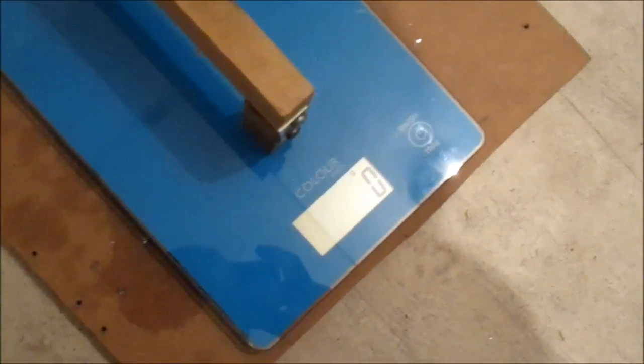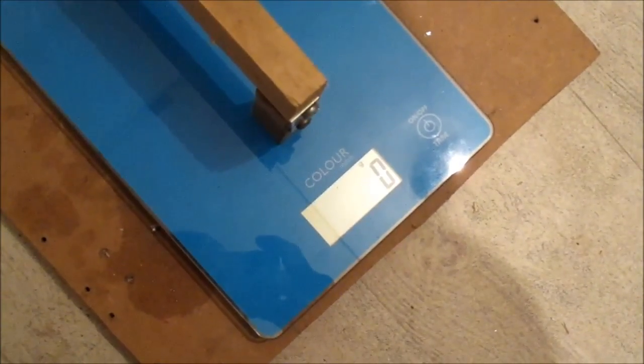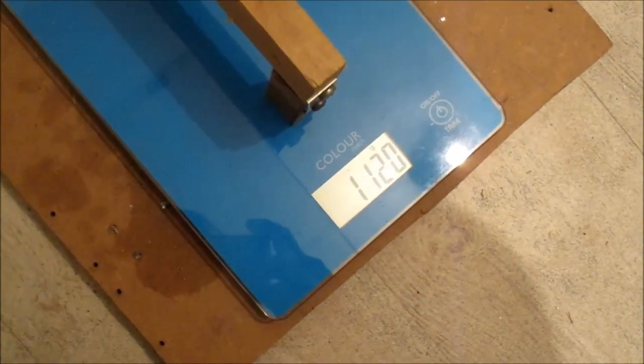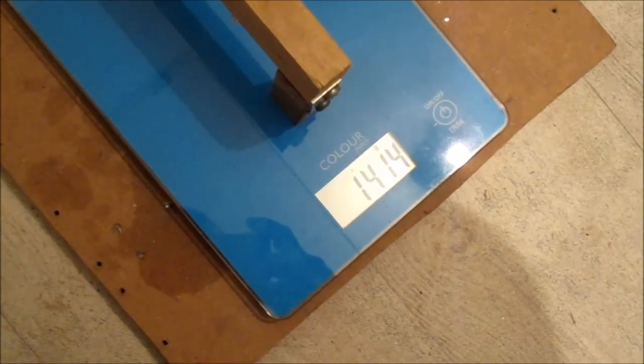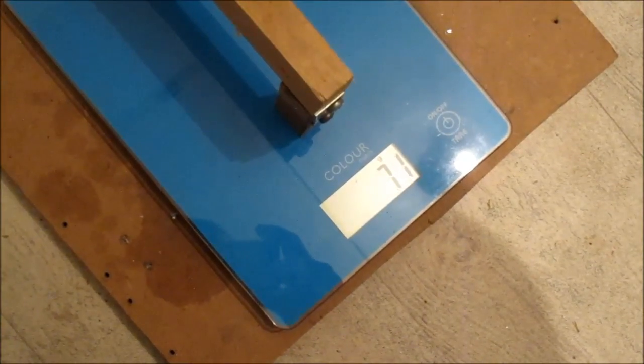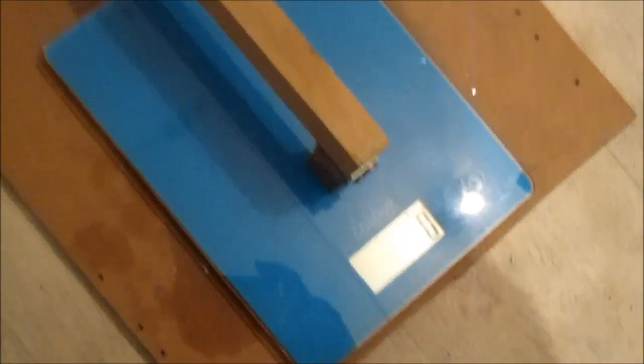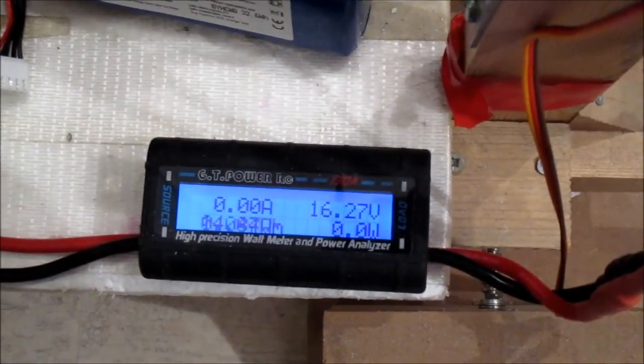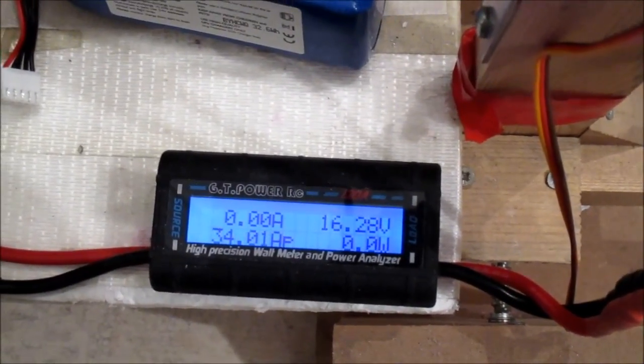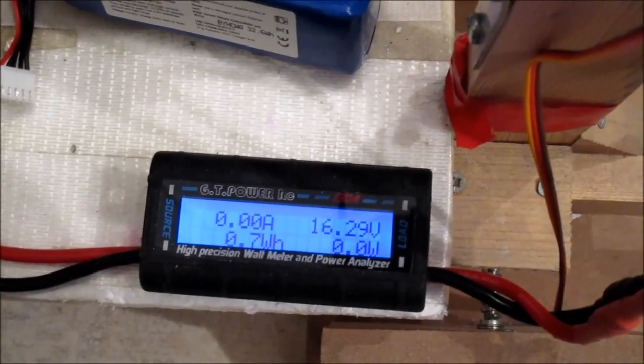See what thrust we get and see what power it pulls. A little bit less thrust, about 50 grams less than the 6x4. See what the power difference is. Oh, focusing, that's better. 34 amps, 513 watts.